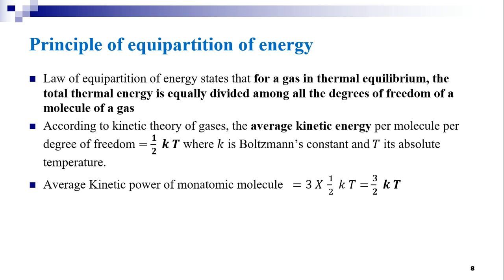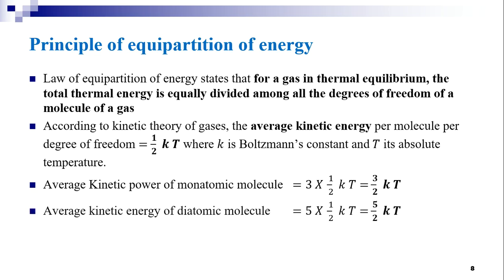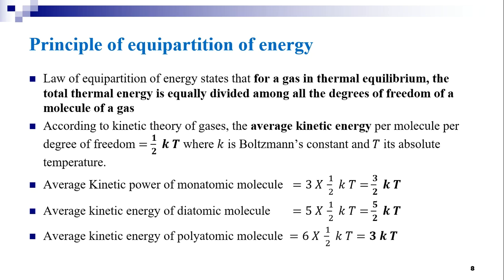The average kinetic energy of a monoatomic molecule is 3 × ½kT = (3/2)kT. The average kinetic energy of a diatomic molecule is 5 × ½kT = (5/2)kT. The average kinetic energy of a polyatomic molecule is 6 × ½kT = 3kT. Hence, the equipartition of energy is calculated among all the degrees of freedom.